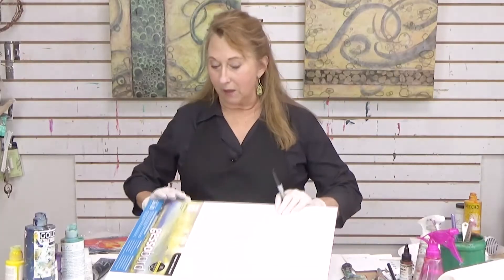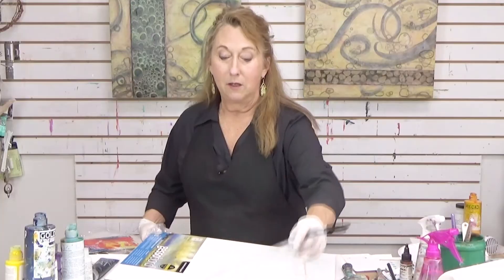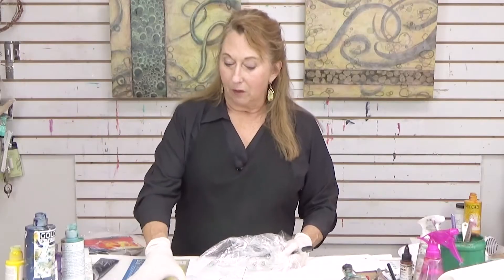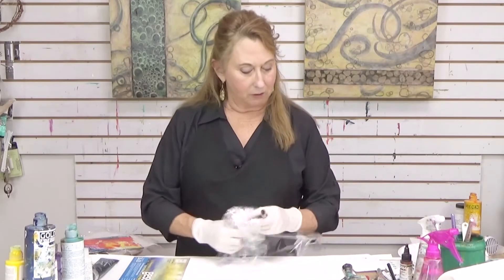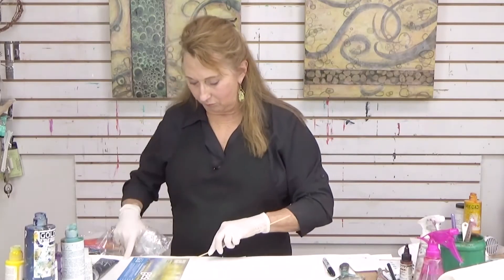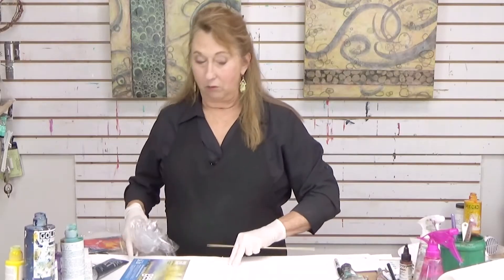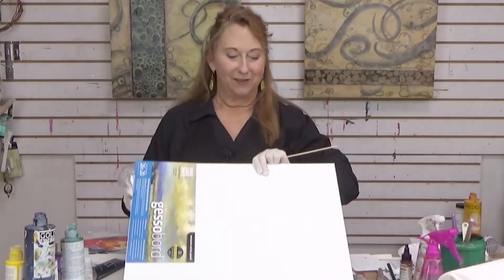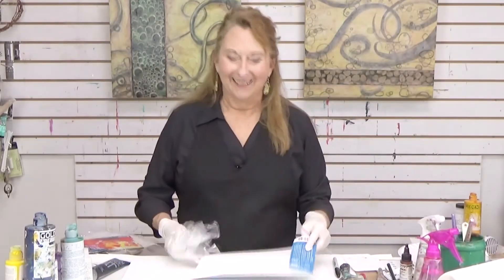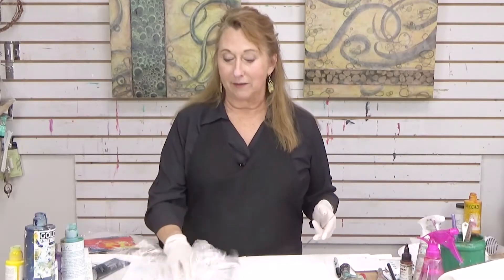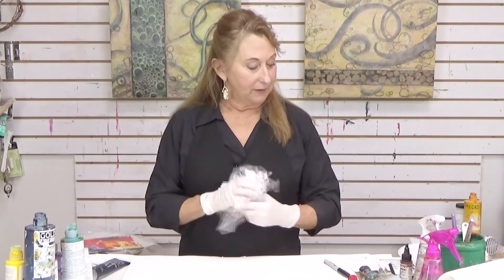Each surface is going to have its own qualities — the gesso board is nice and absorbent. If you're working on canvas, it's going to have a different surface. I'm just going to clear this plastic that was stuck on here — problem solved. Remember I said I hang on to this because it's another great way to blend. This is the plastic that came off of the panel surface.